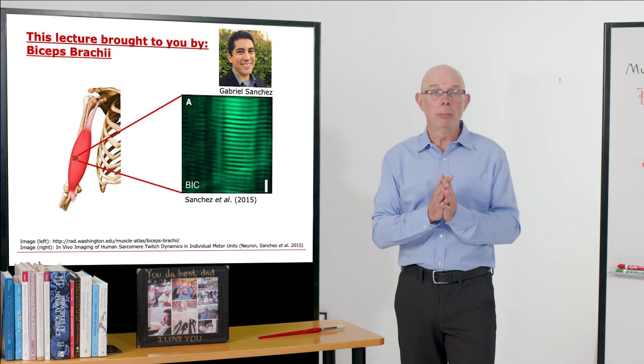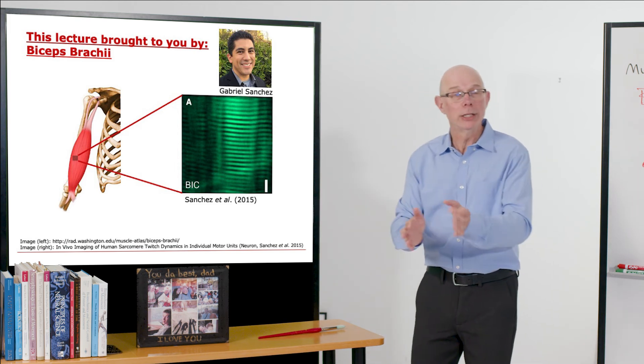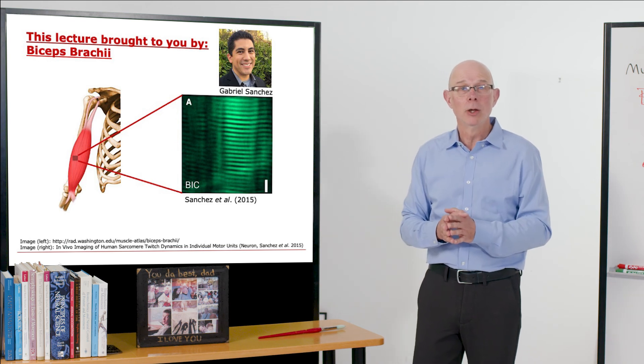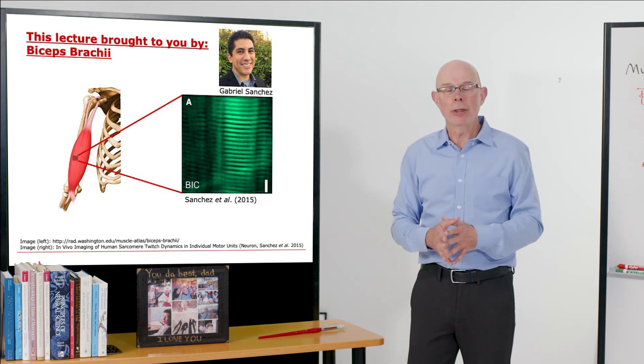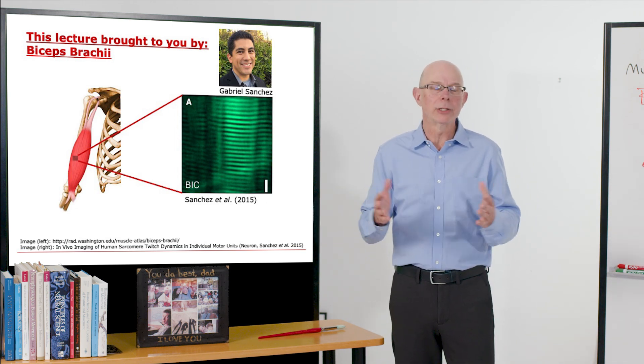Gabriel Sanchez, Mike Llewellyn, Mark Schnitzer, and I invented a microscope that you can insert in the muscle and see for the first time these sarcomeres in living humans. We can see how long they are and whether the muscle can be too long, too short, why it's weak, or why it's strong.